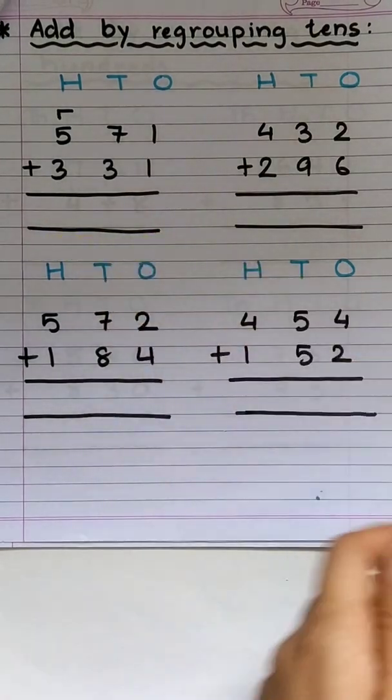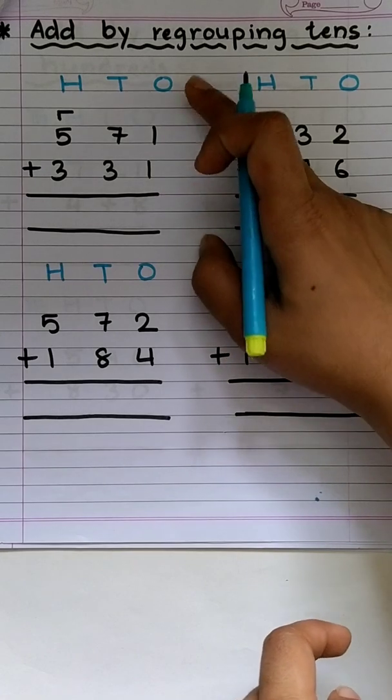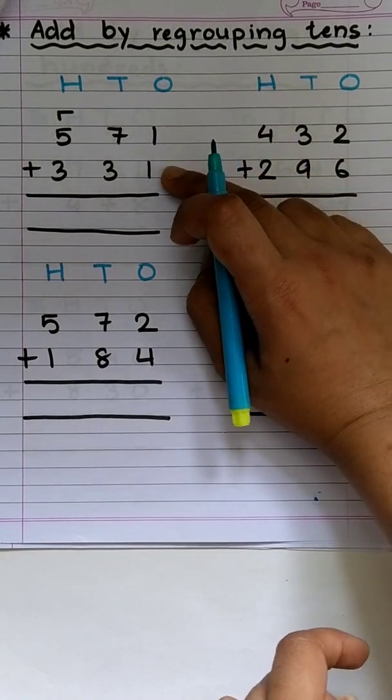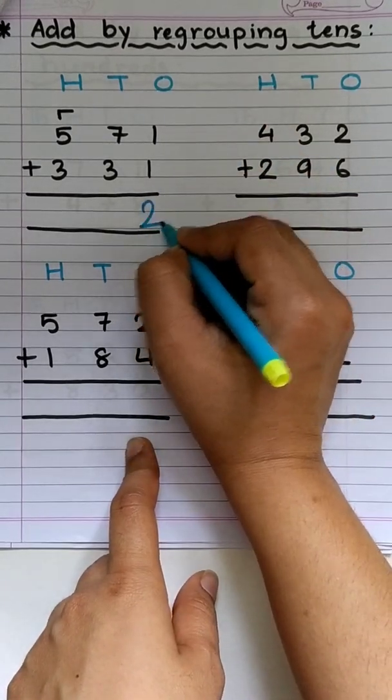Let's begin with the first sum. Now 1 plus 1, as you know we always start with ones place, right? So 1 plus 1, answer will be 2. Simple.